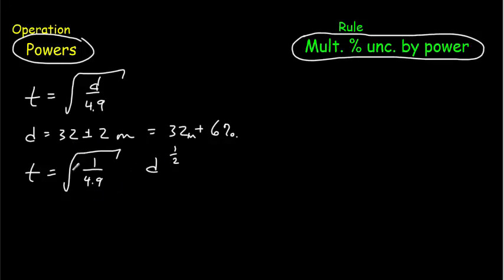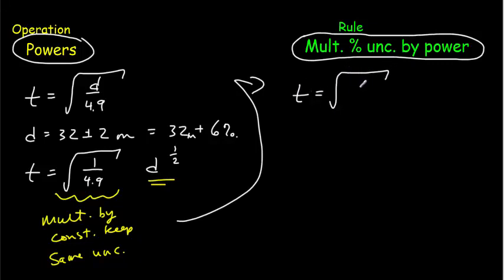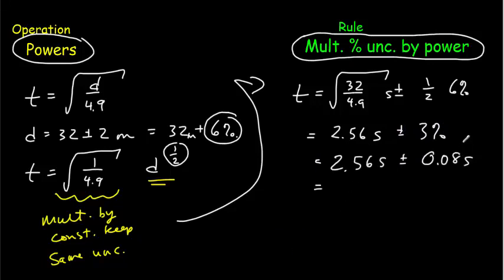The constant out front doesn't affect the percentage uncertainty, because multiplying by a constant keeps the same percentage uncertainty — that's determined by d itself. So t's value is going to be the square root of 32 divided by 4.9, plus or minus one-half times 6% — that's the power times the percentage uncertainty in d. If you work that out, you get 2.56 seconds plus or minus 3%. Then 3% of 2.56 is about 0.08, so our final answer is 2.56 plus or minus 0.08 seconds.